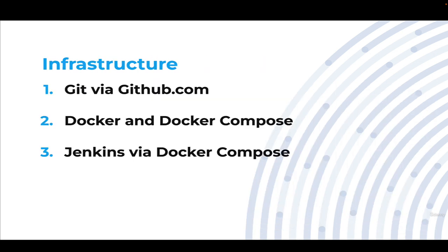The course starts with the basic infrastructure needed to run a local development environment — beginning with Git via GitHub.com, which includes generating an SSH key so you can clone the example code bases via Git SSH. Next, we set up both Docker and Docker Compose for running container images locally. Finally, we move on to running Jenkins itself as a Docker container via Docker Compose, giving you an environment to experiment with and save changes locally — and if things go wrong, you can always start over from scratch.